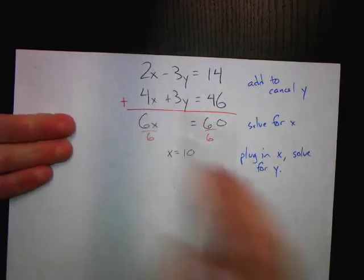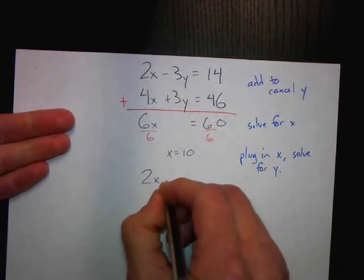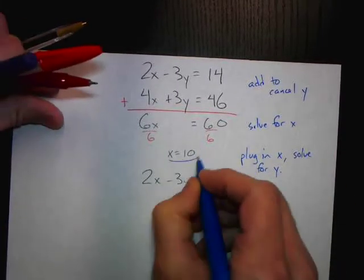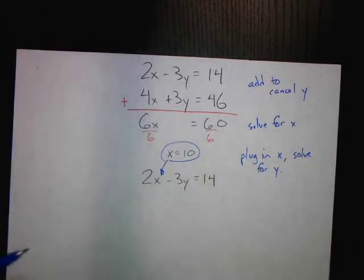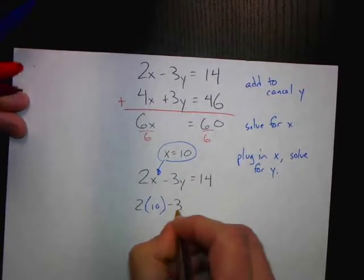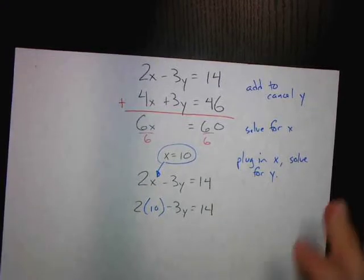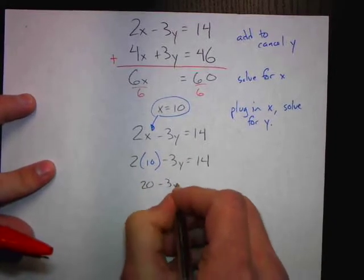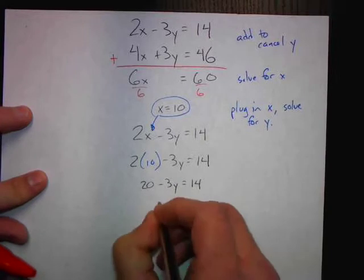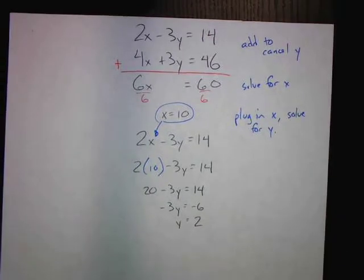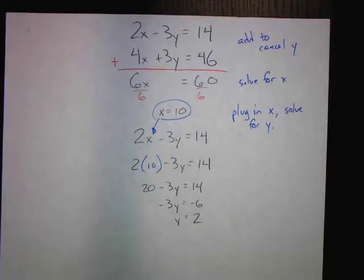I'm going to use the first equation — I think these numbers are better to work with, though it doesn't matter which equation you use. I'm going to substitute x equals 10 where I have x. So I have 2 times 10 minus 3y equals 14. That gives 20 minus 3y equals 14. I subtract 20 on both sides, then divide both sides by negative 3, and find out that y equals positive 2.